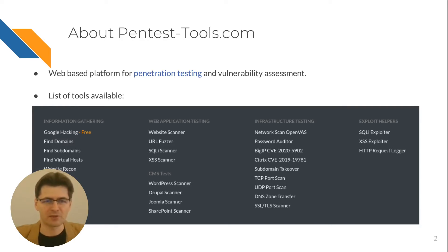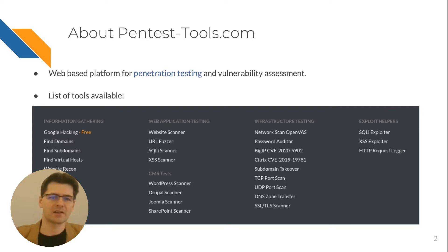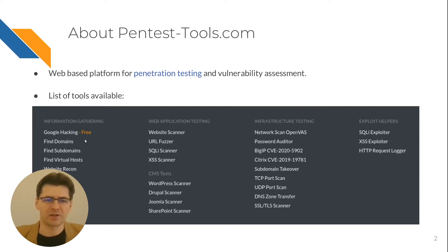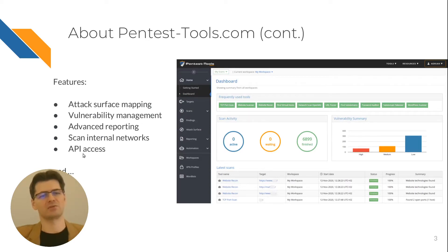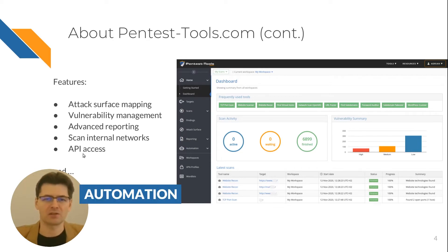We are a web-based platform for penetration testing and vulnerability assessment and you will see that we have a lot of tools — about 20 tools — available grouped into these categories: information gathering, web application testing, infrastructure testing and some exploit helpers. Besides the tools we also have some very interesting features like attack surface mapping, vulnerability management capabilities, advanced reporting. All these can be done through API and now we have added automation on top of that.